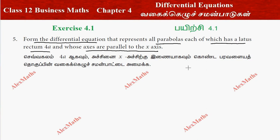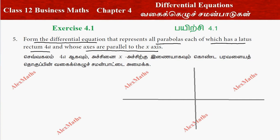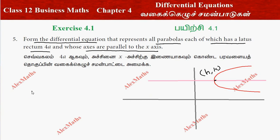If you look at the x-axis and y-axis, the parabola has latus rectum 4a and axis parallel to the x-axis. If you look at one such parabola, the general equation — with vertex at (h, k) — for the right side is: (y - k)² = 4a(x - h). This is the first equation.